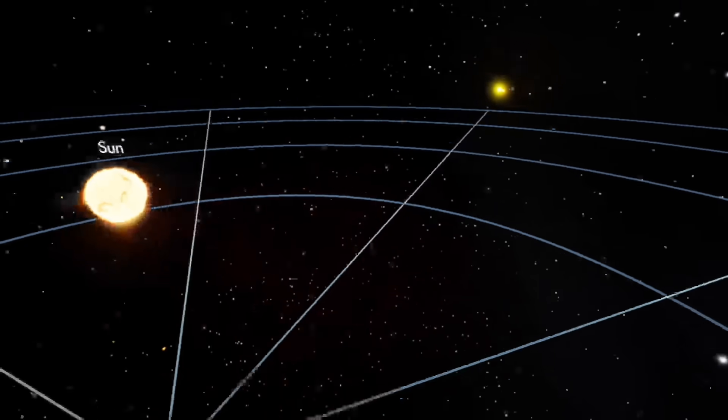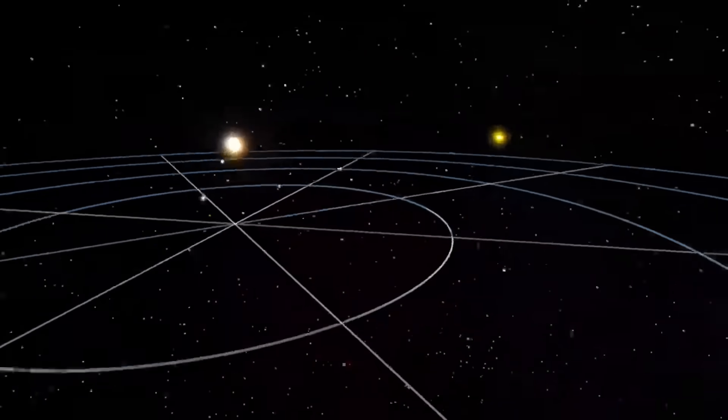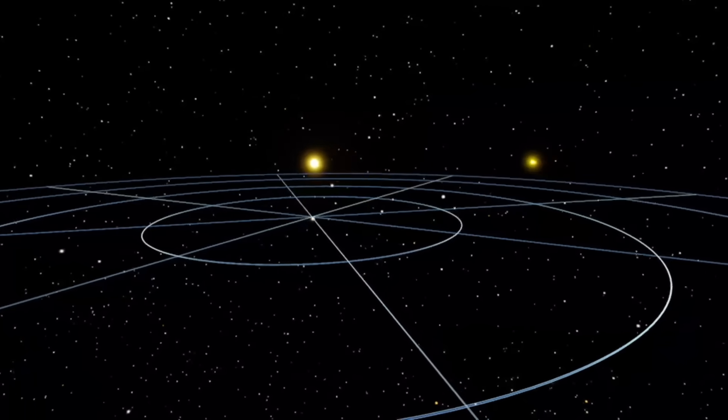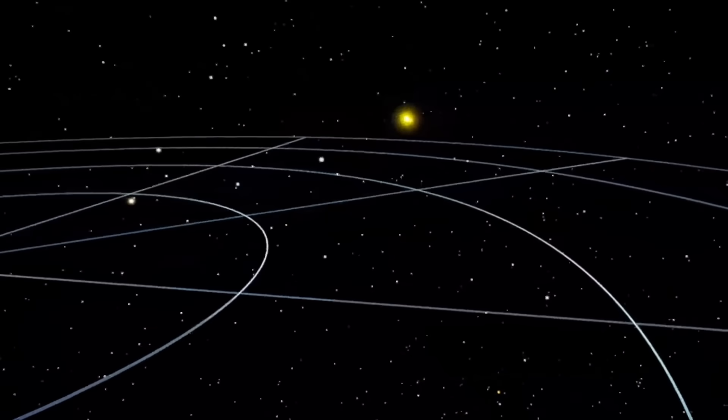But it gets even better. This Monday mission, Starlink 692, carried a second historic milestone on board. It deployed the 3,000th Starlink satellite that SpaceX has launched this year in 2025. 3,000? Let me put that in perspective for you.